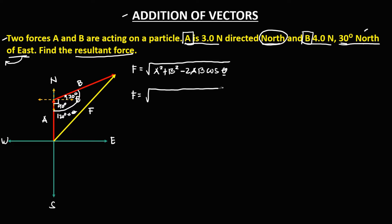Substituting all the values: force A is 3 newtons, force B is 4 newtons. So we have F² = 3² + 4² − 2 × 3 × 4 × cos 120°.